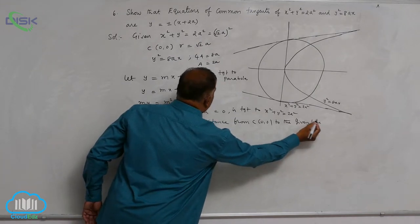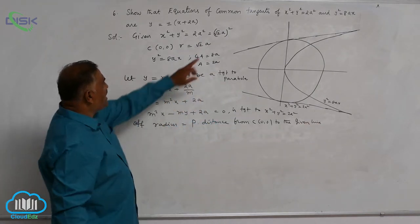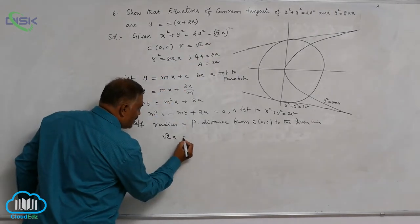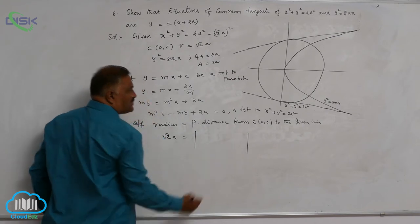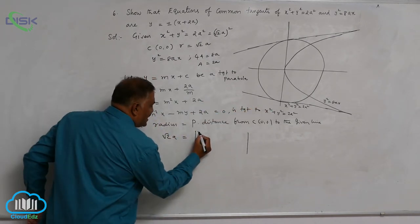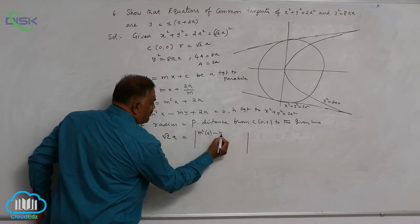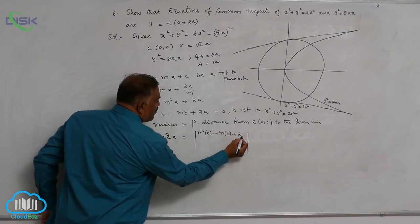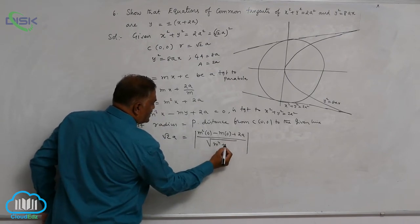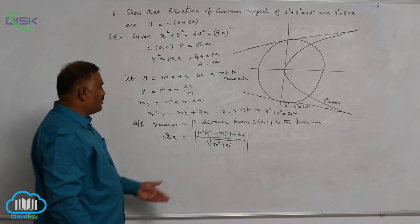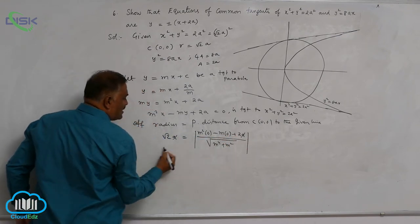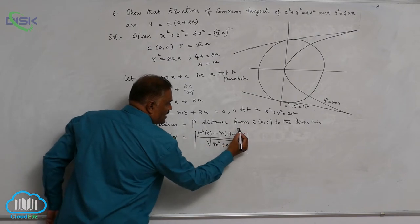Now you observe radius. What is the radius of the circle already? root 2a. Root 2a is equal to perpendicular distance from center. Center is 0, 0. This is m square into 0 minus m into 0 plus 2a divided by square root of m power 4 plus m square. Now this 2a here, you can check a gets cancelled here, one root 2 gets cancelled here.